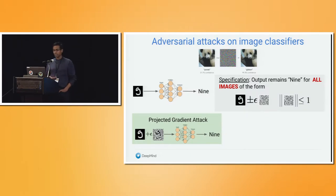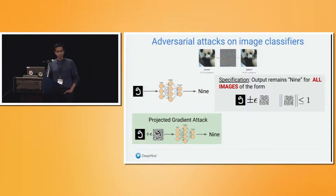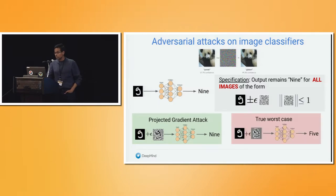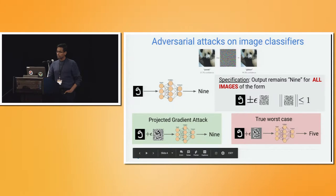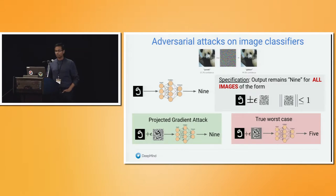If we think about how to formalize the property of not having adversarial examples, we can write down a specification: if I have my input image and I add a bounded perturbation, I want to ensure the output label remains the same for all perturbations within some allowed set. You can try to verify this by generating counter-examples using gradient-based methods, but for a robust network these attacks can fail to find a counter-example — yet a more exhaustive search can find a perturbation that flips the label from 9 to 5.